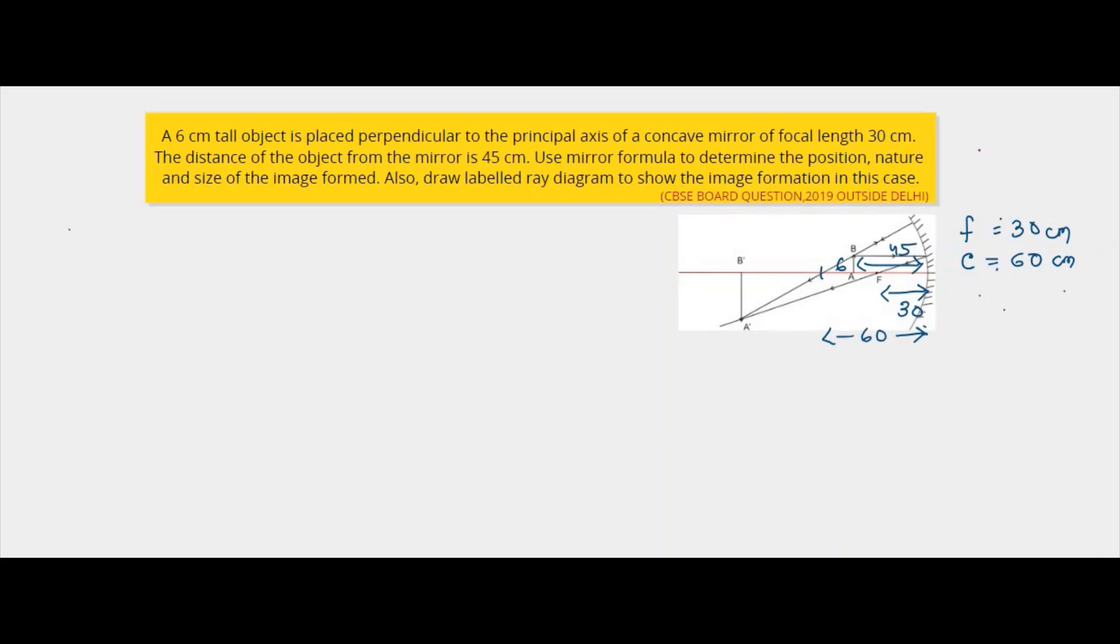Now this is a case of the object being situated between the center of curvature and the focus. So if we look at the ray diagram for image formation, one ray will go parallel to the principal axis and after reflection it will pass through the focus.